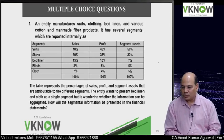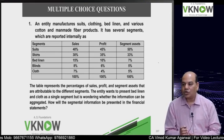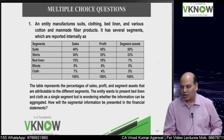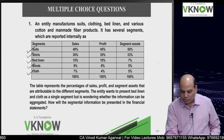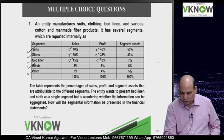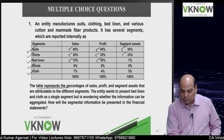An entity manufactures suits, clothing, bed linen, and various cotton and man-made fiber products. It has several segments reported internally as: suits, shirts, bed linen, blinds, and cloth. Sales figures are given. Looking at the profit, segments 1, 2, and 3 will become reportable segments independently if you apply the 10% criteria.